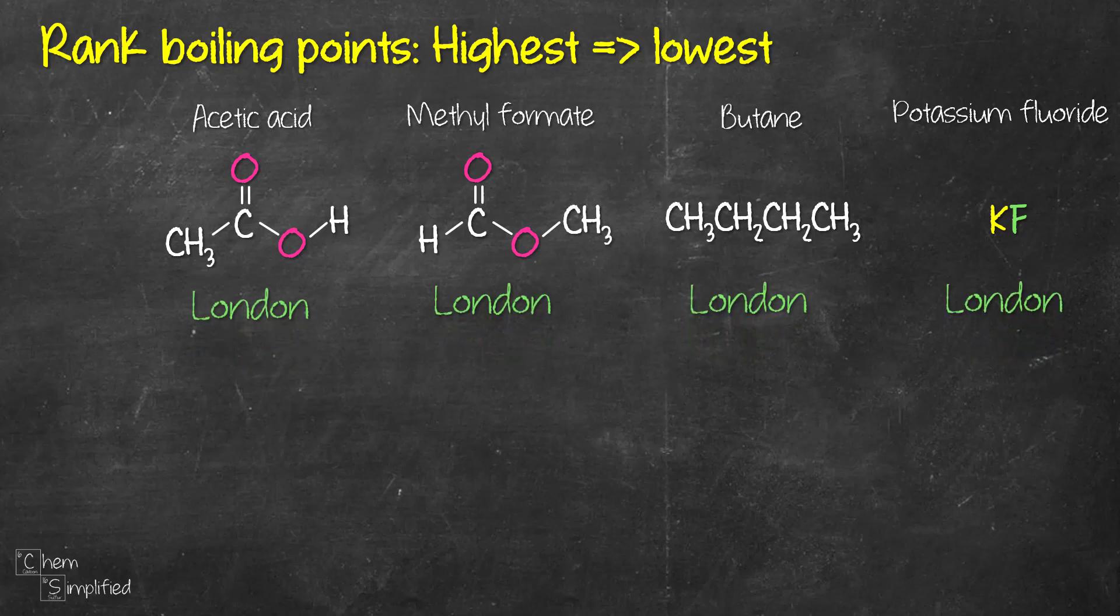Looking at the structure of acetic acid, we have permanent dipoles between the CO bonds, so that means we have dipole-dipole interaction present in acetic acid. On top of that, notice that we have a hydrogen that is directly connected to oxygen. That's hydrogen bonding right there. So that's pretty much all the intermolecular forces that are present in acetic acid.